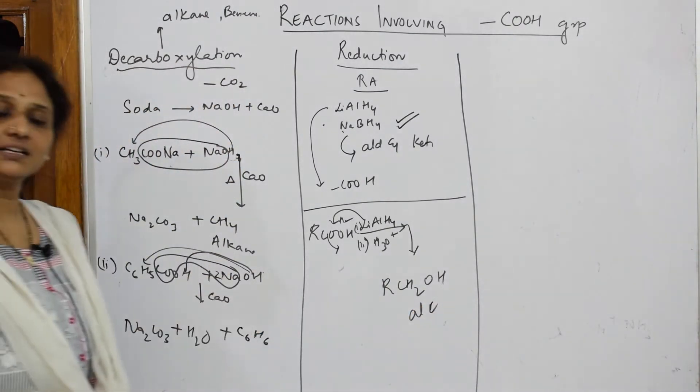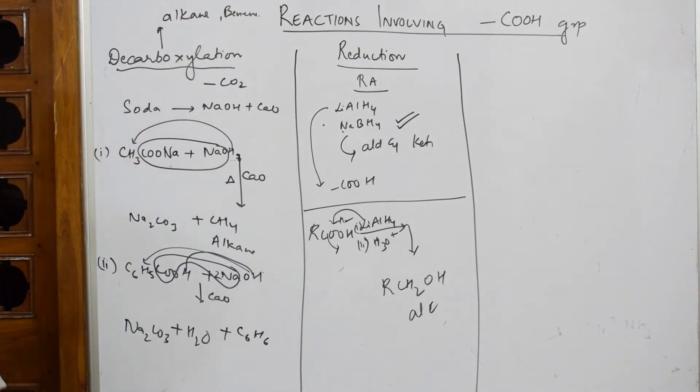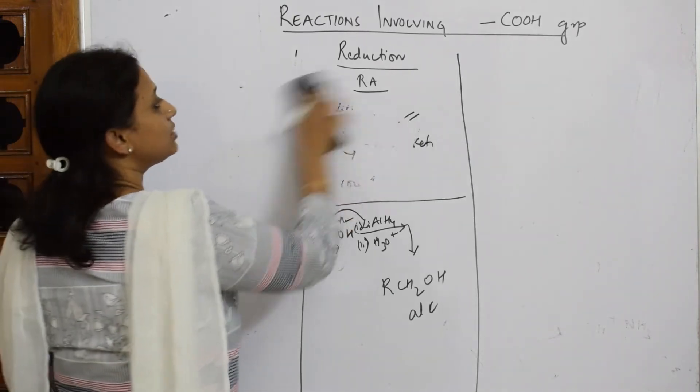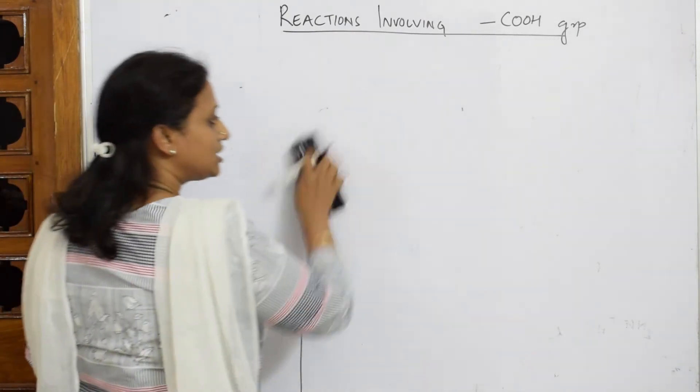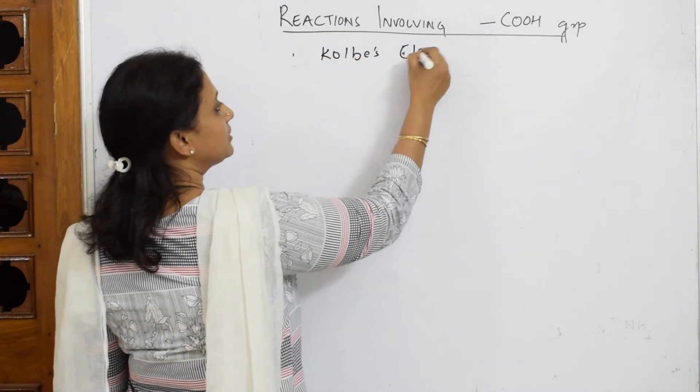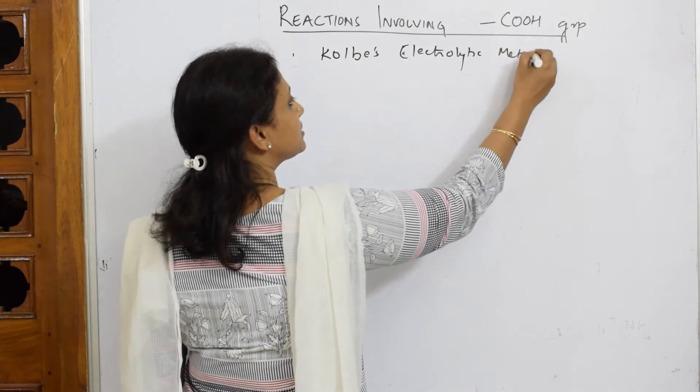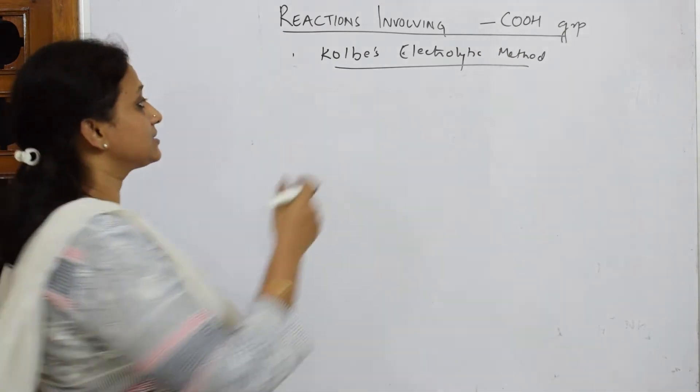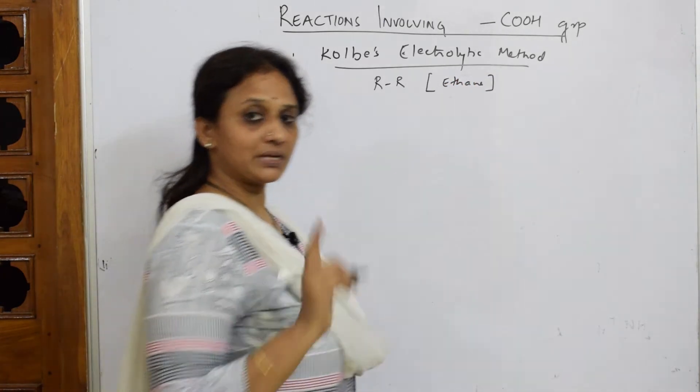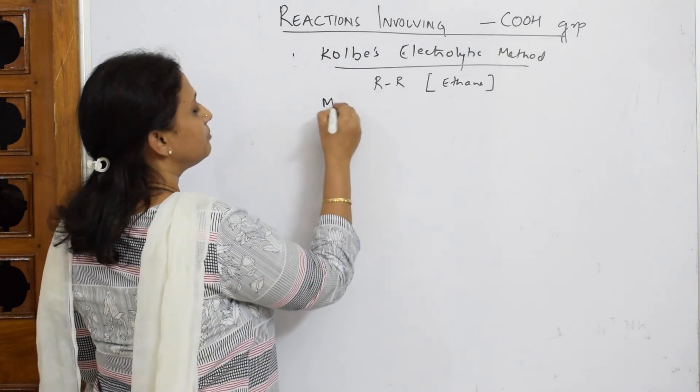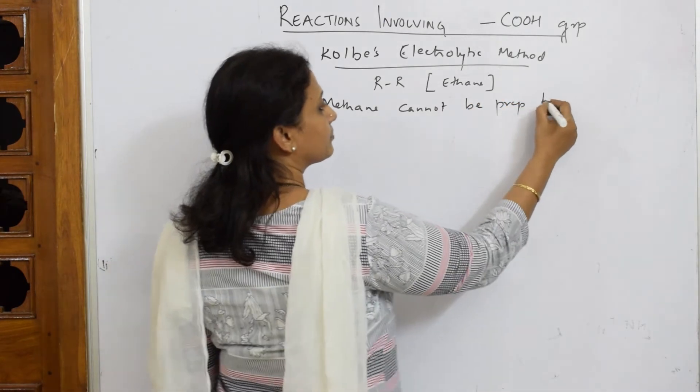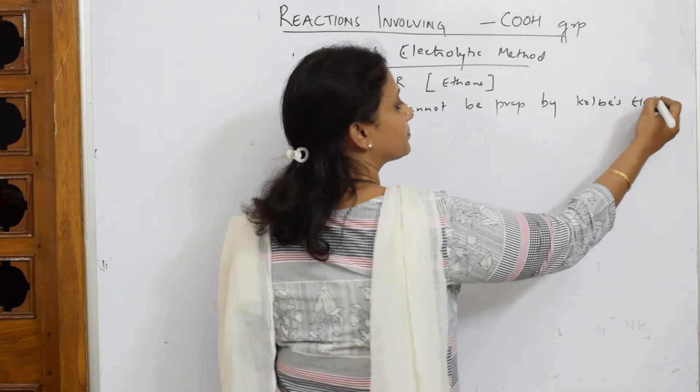So, now let us erase the whole thing and start with Kolbe's electrolysis method. I need the whole board for showing you the Kolbe's electrolytic method. The most important thing to remember is this method is used to prepare your alkanes. It's going to prepare RR combination but never methane. Methane cannot be prepared by Kolbe's method.